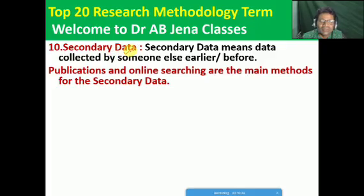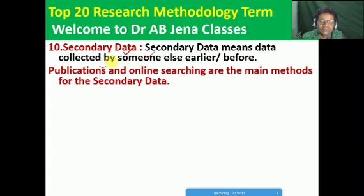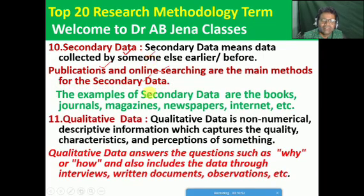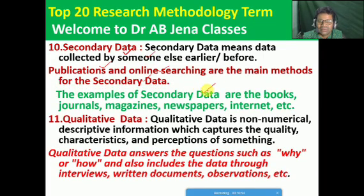The opposite is secondary data. Secondary data means data collected by someone else earlier or before — secondary data are already available. Publication and online searching are the main methods for secondary data. Examples of secondary data are available from books, journals, magazines, newspapers, internet, etc.